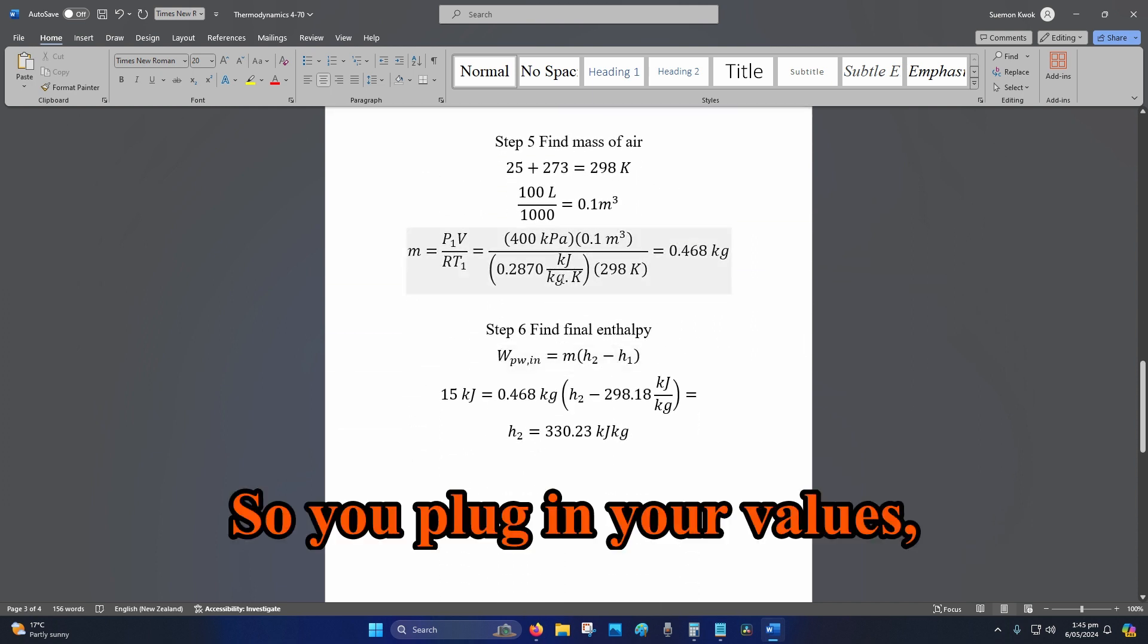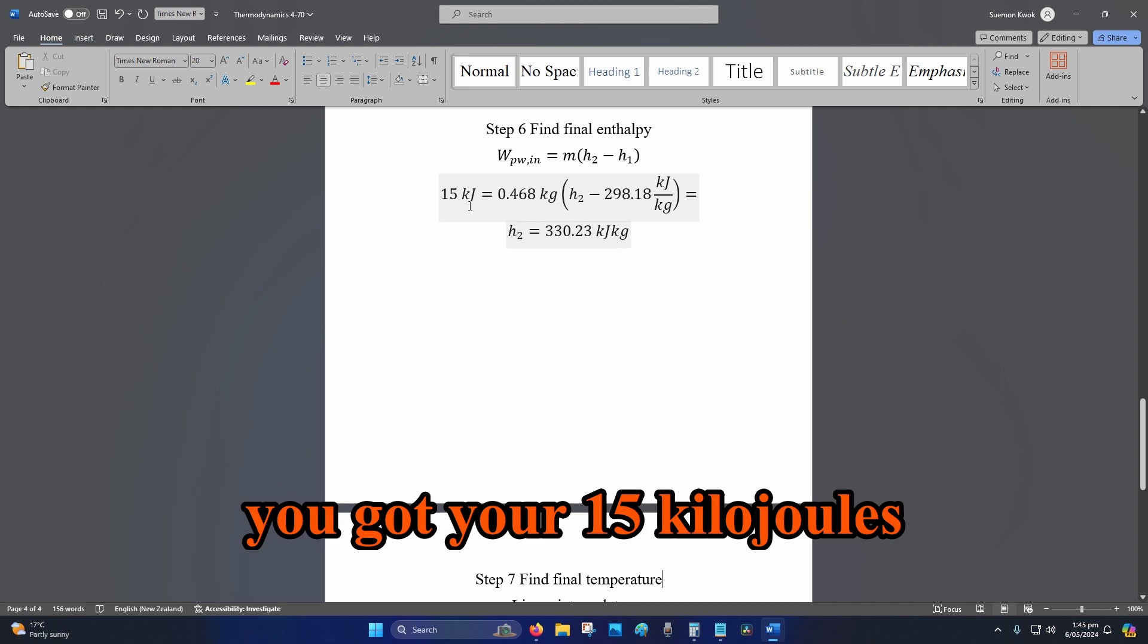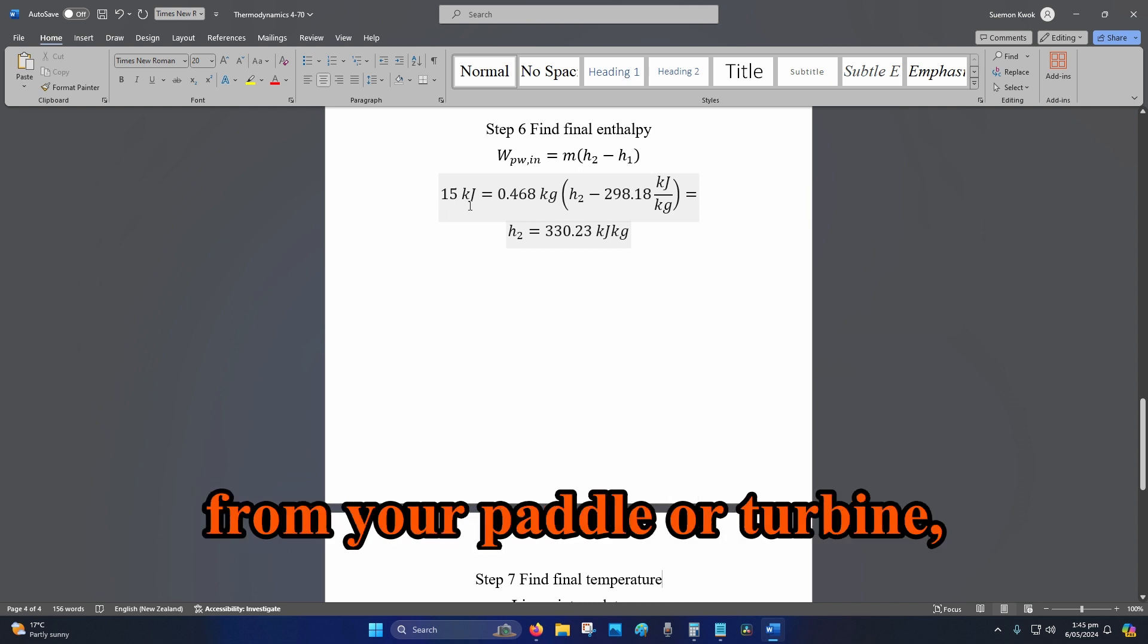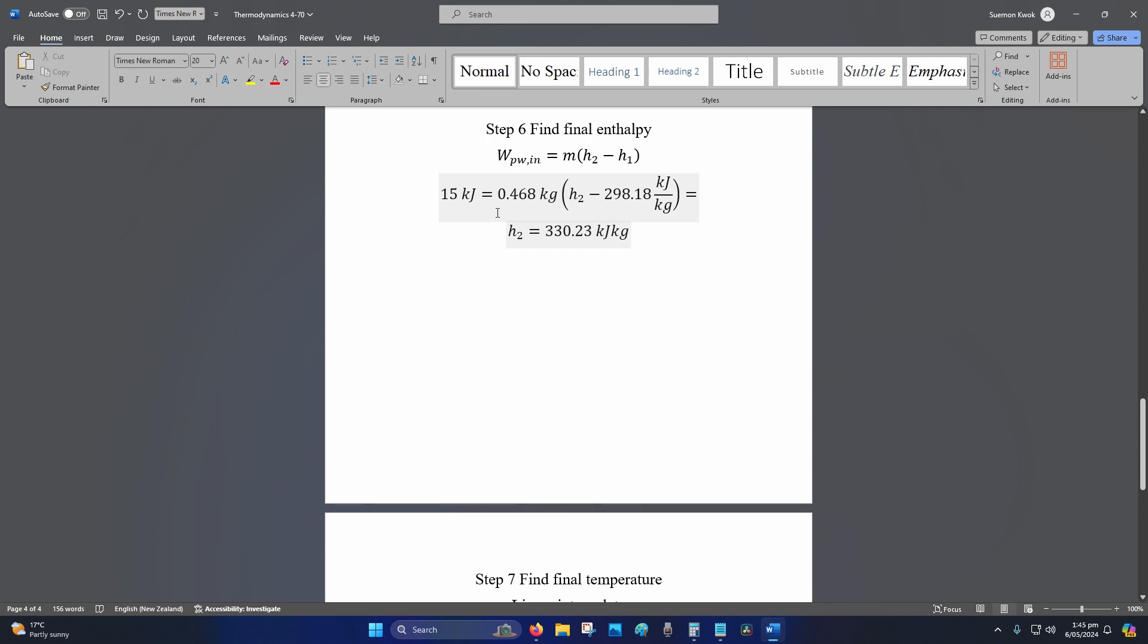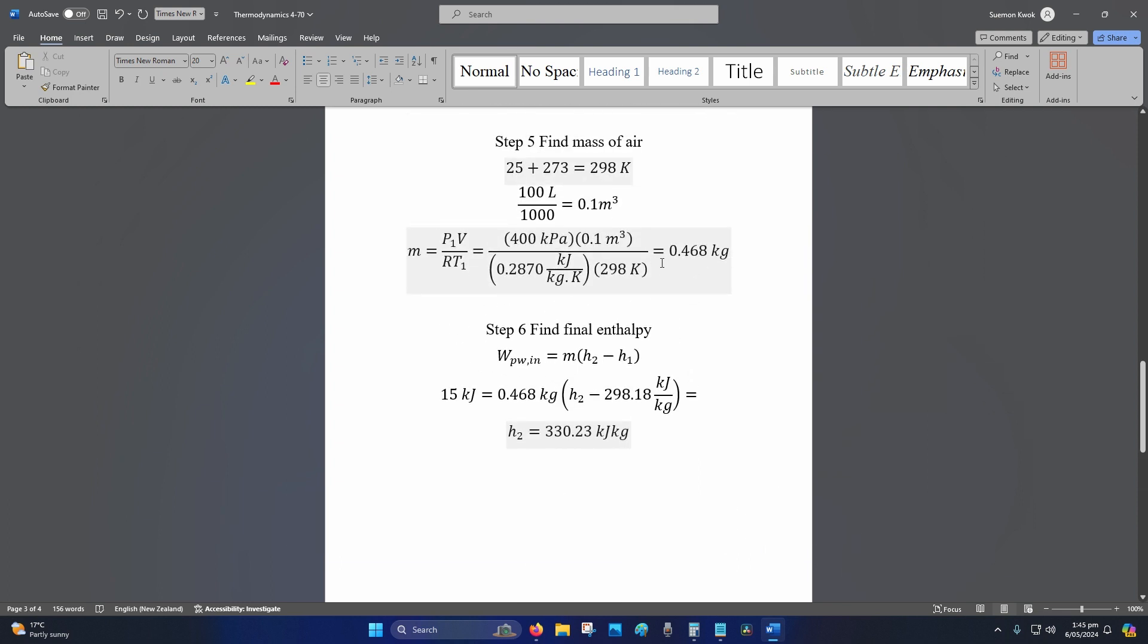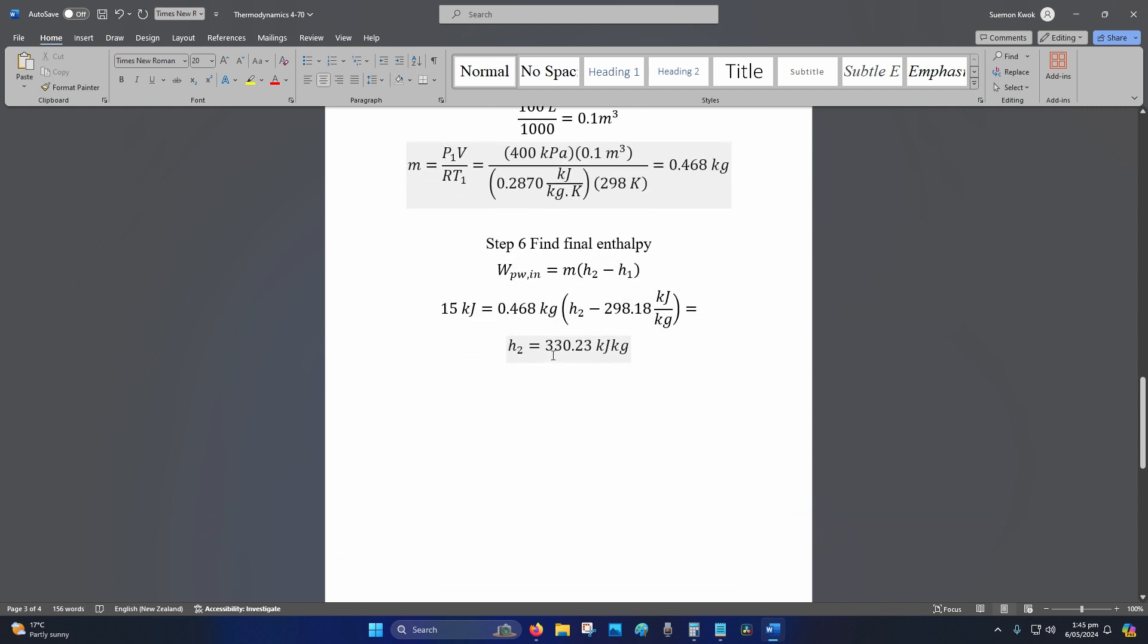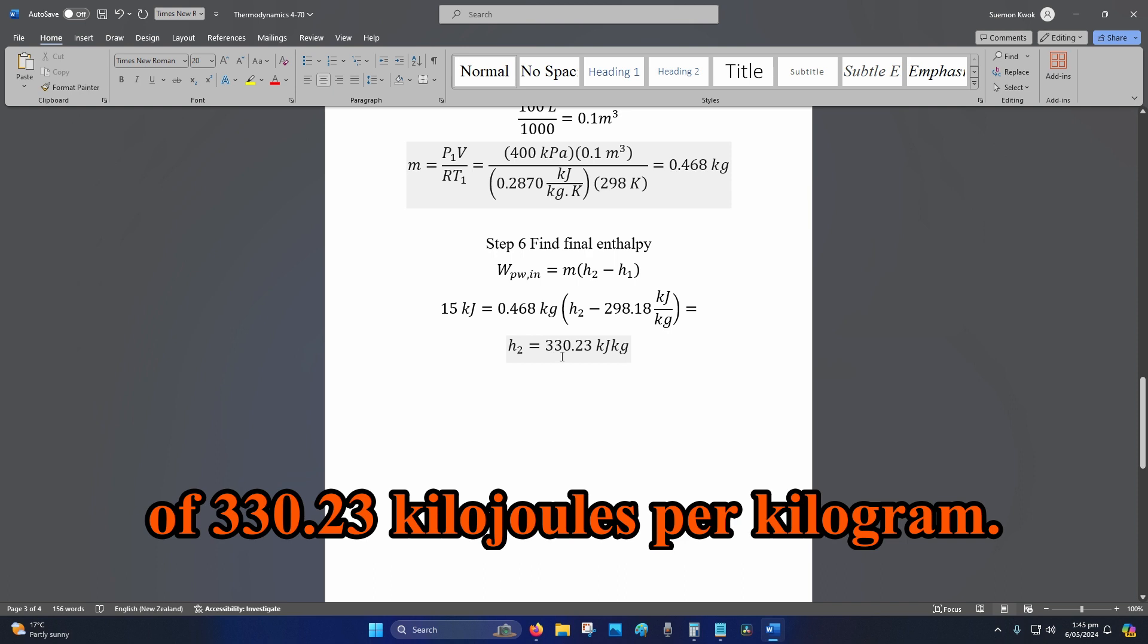So you plug in your values. You got your 15 kilojoules from your paddle or turbine, that's stated in the question. You just worked out your mass in step five. You plug in your values and you'll get your final enthalpy of 330.23 kilojoules per kilogram.